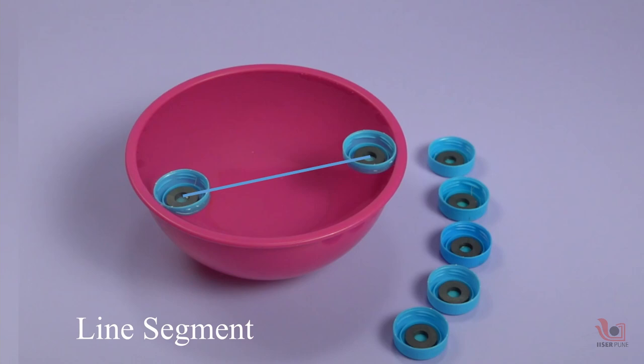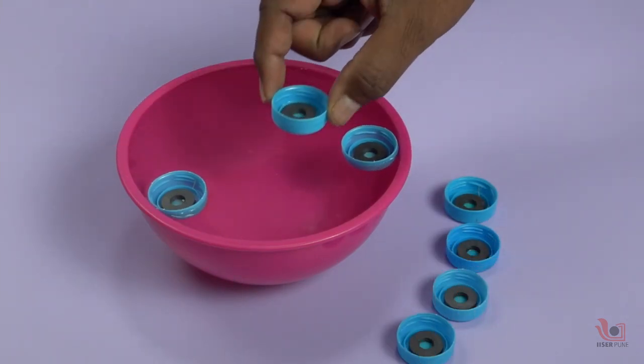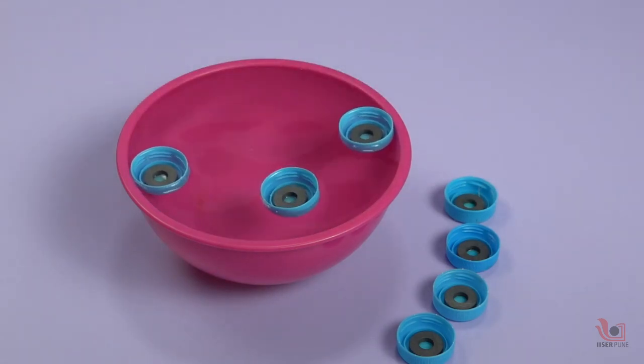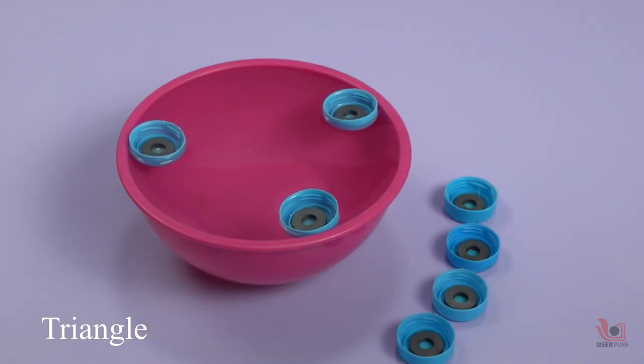When you place a third magnet in the water bowl, all three magnets will repel each other and form a nice triangle. If the strength of each magnet is the same, then we would get a nice equilateral triangle.